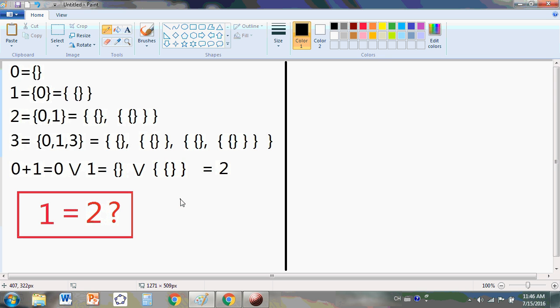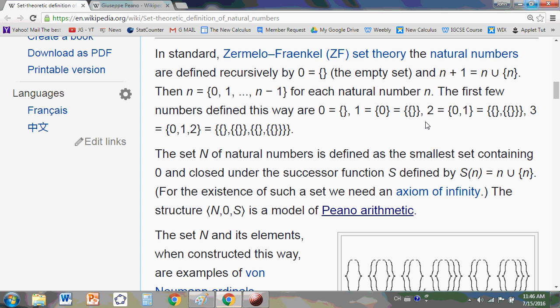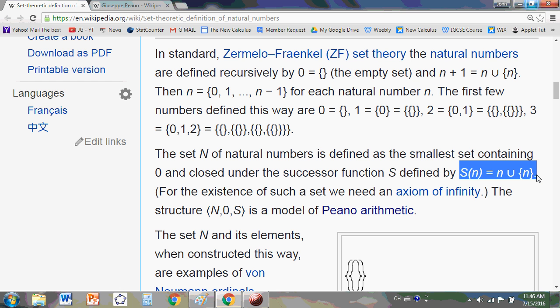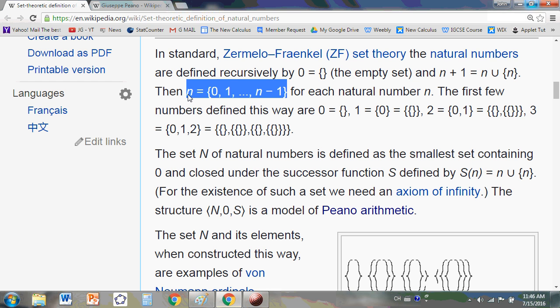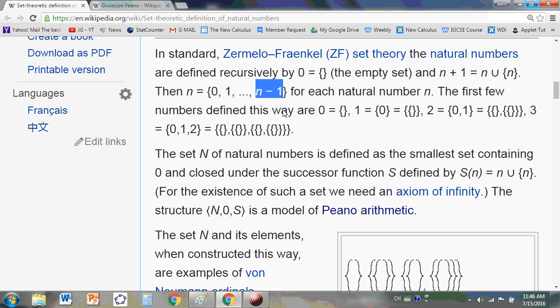Now watch what happens when we try to do arithmetic. If we add zero and one, we're effectively looking at the union of zero and one, because if you look at the Wikipedia entry, that's how the successor is defined. It says S(N) is equal to N union that set which is supposedly the elements that came before. Notice another thing that's incredibly hilarious there. It says N minus 1. Now what on earth is that?